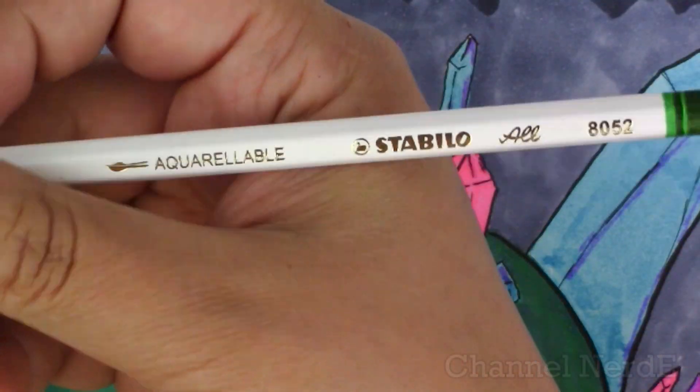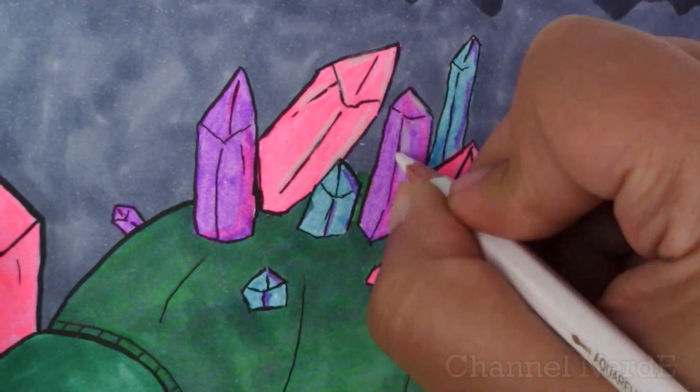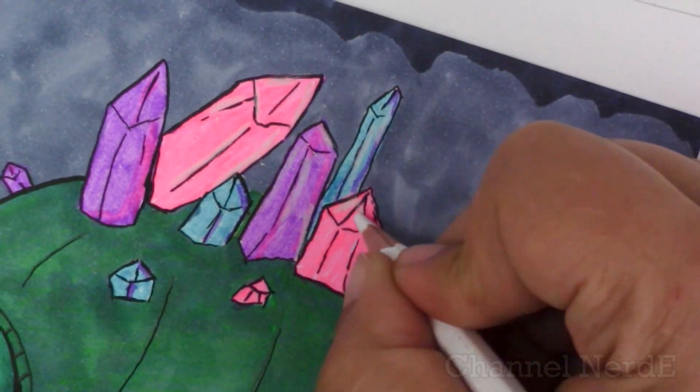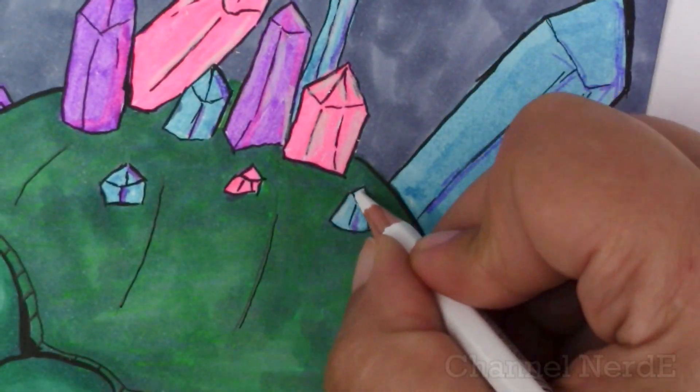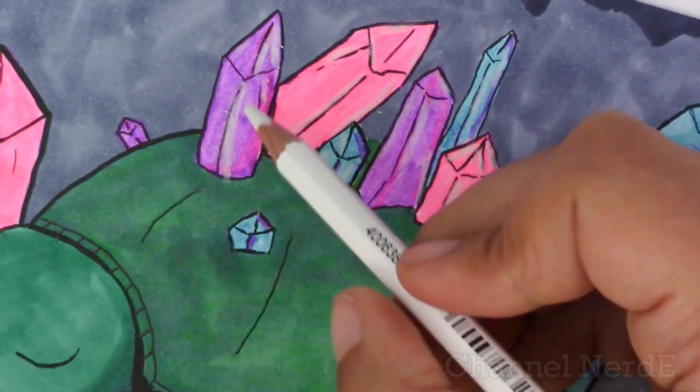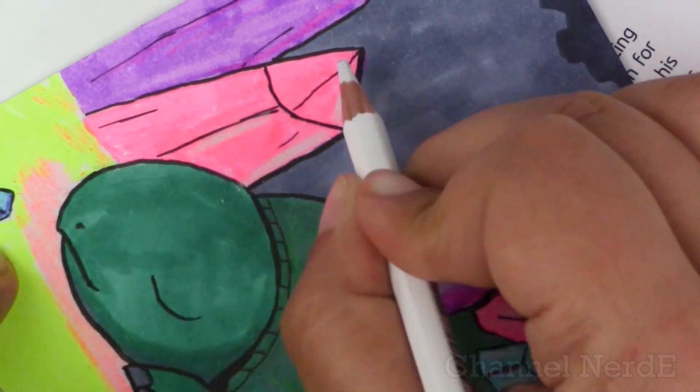For the crystals I used the aquarellable pencil and I have to say it is definitely one of my favorite items in these boxes because it's kind of like a jelly roll for highlights but not really like a jelly roll. I really liked it because it layered so easily on every kind of medium.